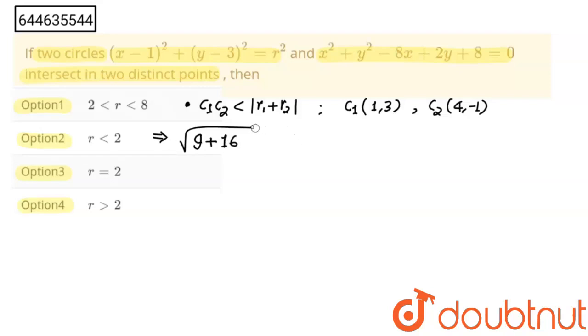And this is less than mod, where r is radius. I am going to find radius of this circle. And r2 will be equals to root under g square plus f square minus 8. So this will be 4 square, 16.